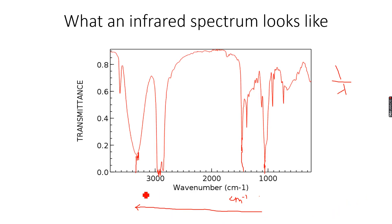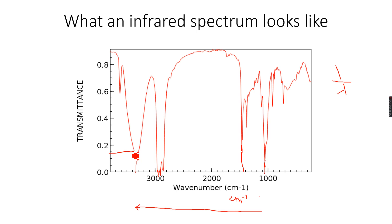Transmittance is basically the exact opposite of absorbance — what is being absorbed is not being transmitted, and what is not being absorbed is being transmitted into the detector. You can see that transmittance is increasing up the scale. A peak at very low transmittance shows that this wavelength was absorbed to a great extent, meaning very little of this wavelength reached the detector because most of it was absorbed by the bonds in the molecule.